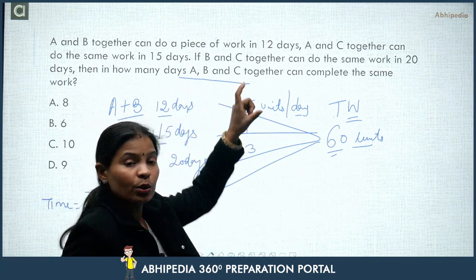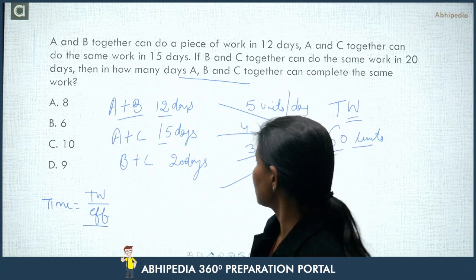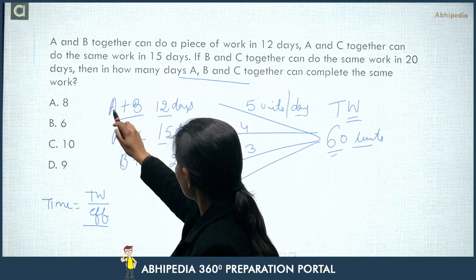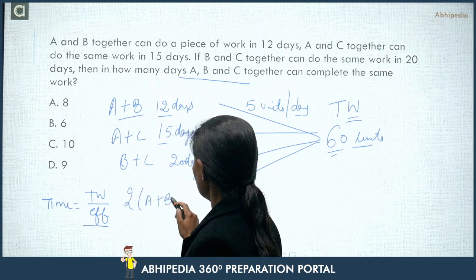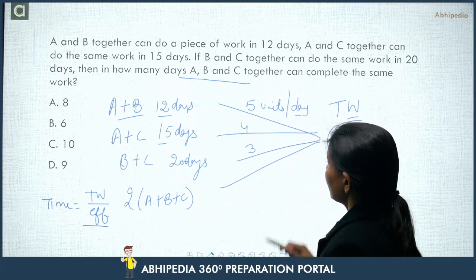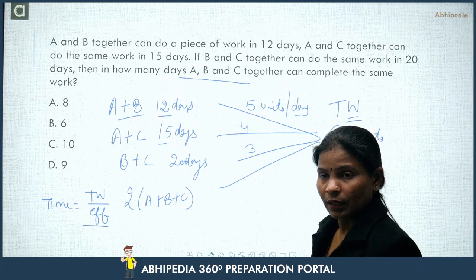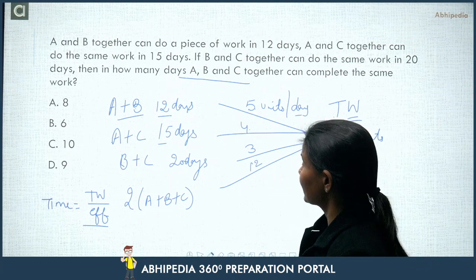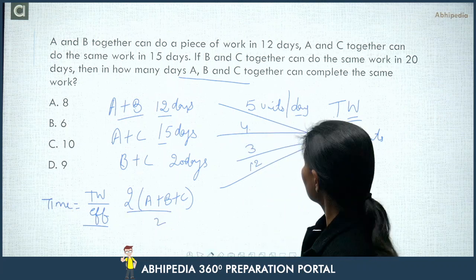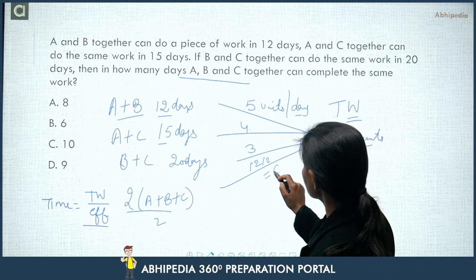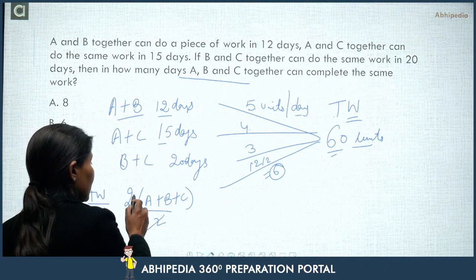The question asks for A, B, and C together. When we add all three pairs: (A+B) + (A+C) + (B+C) = 2A + 2B + 2C. Adding the efficiencies: 5 + 4 + 3 = 12 units. This equals 2(A+B+C). So dividing by 2, the combined efficiency of A, B, and C = 12/2 = 6 units per day.